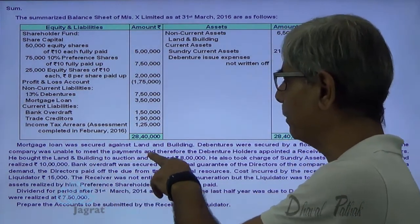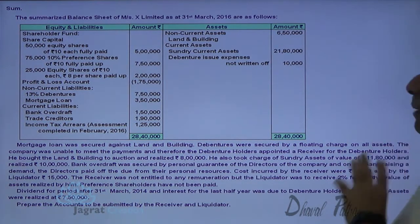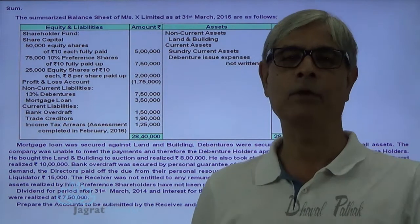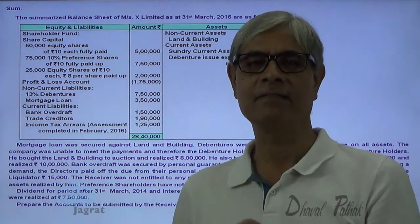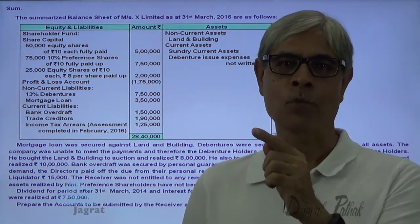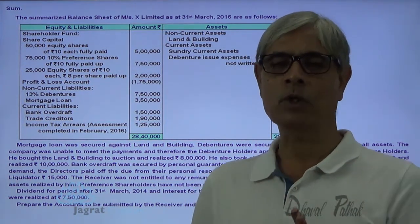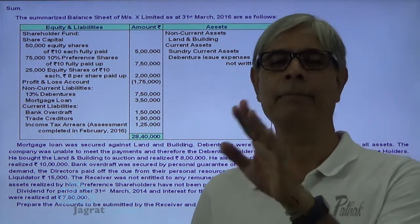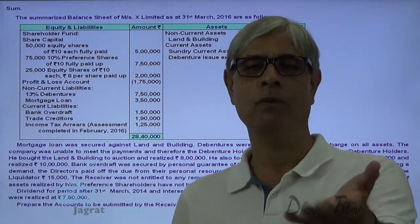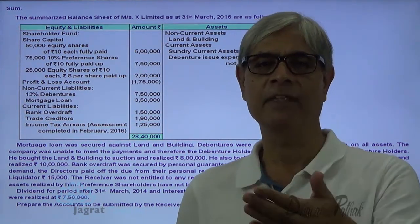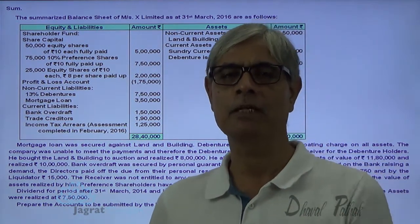The company was unable to meet the payment, and therefore debenture holders appointed a receiver. The receiver is a person who functions like a liquidator until the payment is made to the debenture holders. Once the receiver makes payment to debenture holders for their dues, whatever cash balance is left with the receiver has to be handed over to the liquidator, and the liquidator will proceed with the remaining part of the liquidation proceedings.